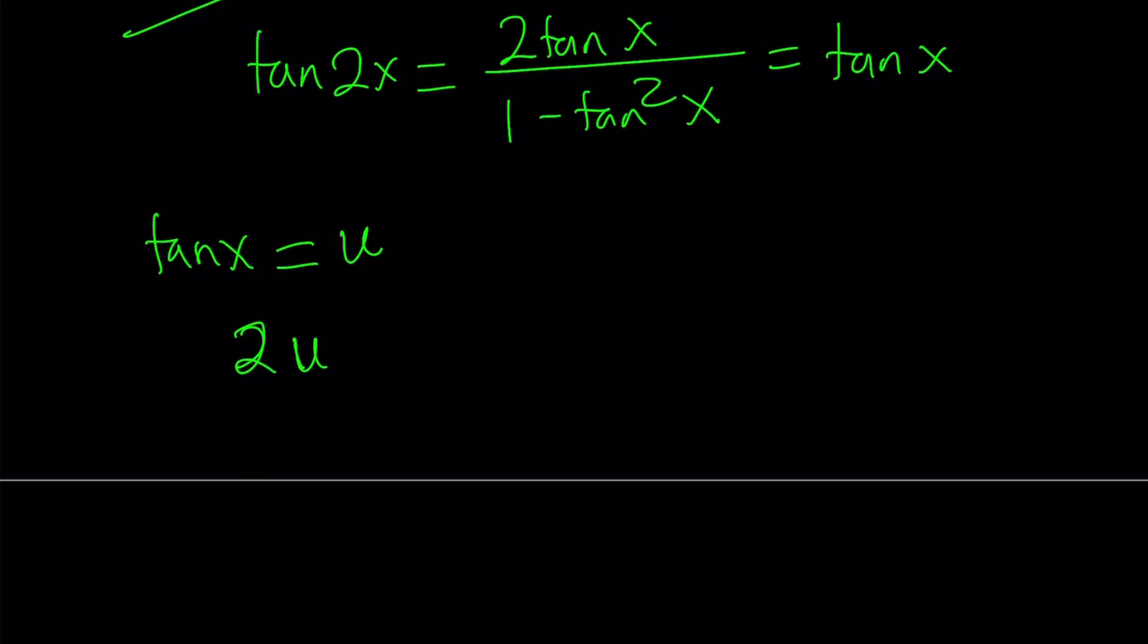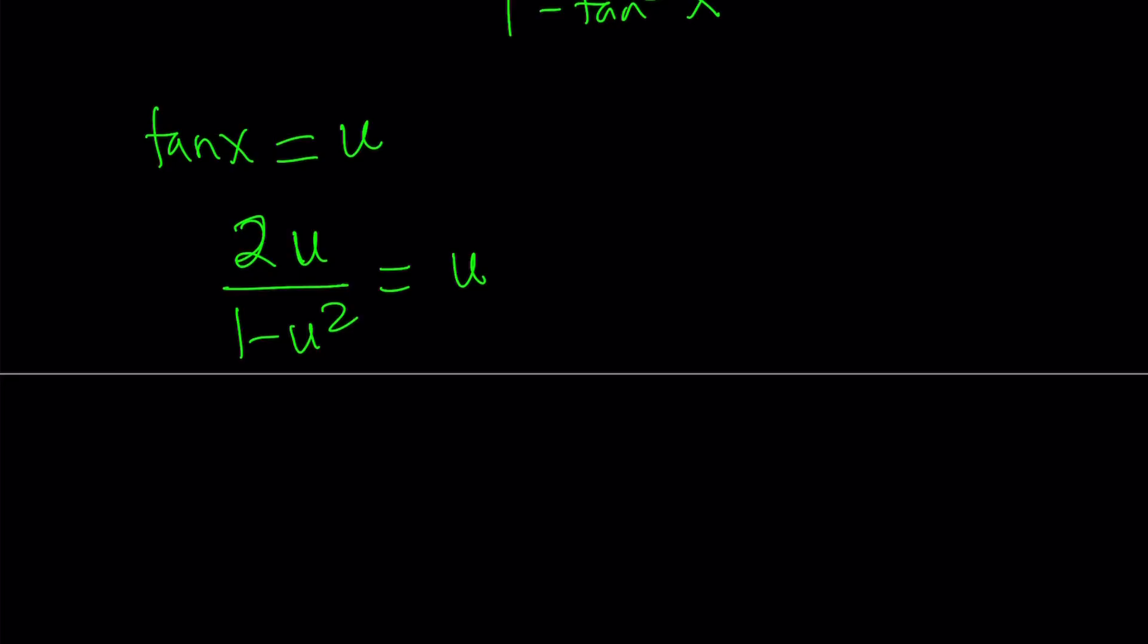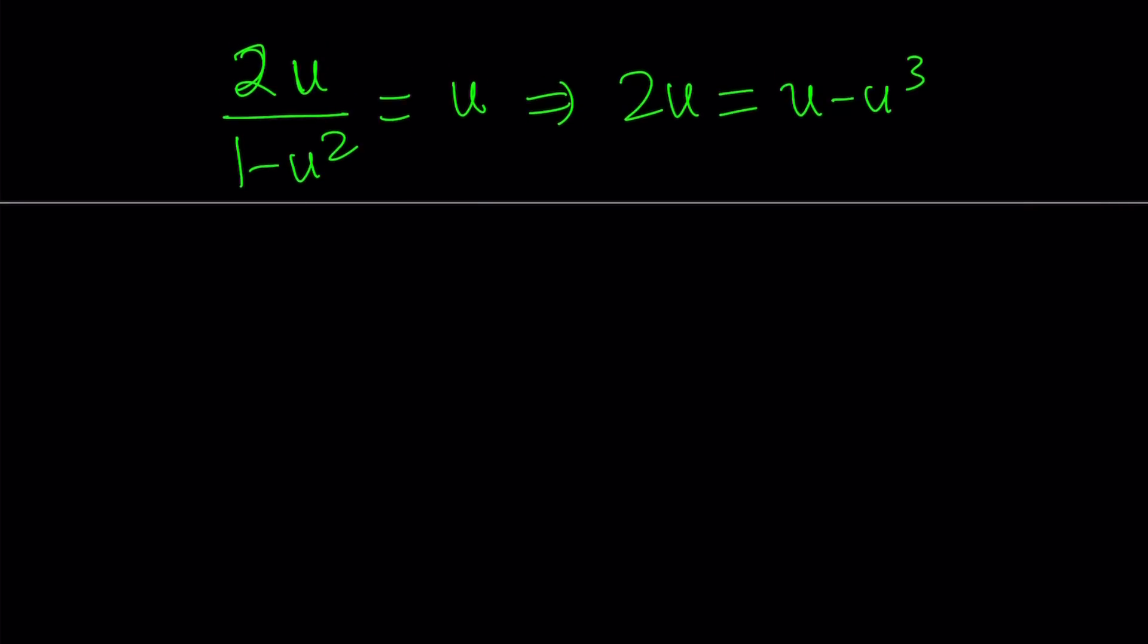2u divided by 1 minus u squared equals u. Now let's cross multiply this equation. From here we get 2u equals u minus u cubed. Don't worry, it looks like a cubic, but it's very easy to solve. We can go ahead and put everything on the left hand side: u cubed plus u equals 0.